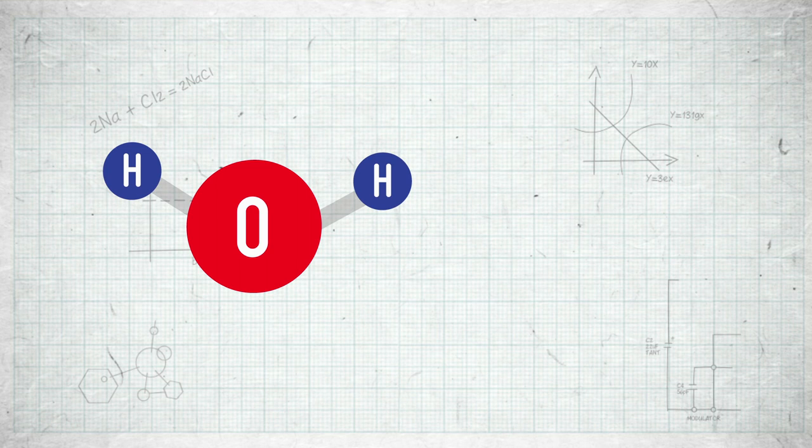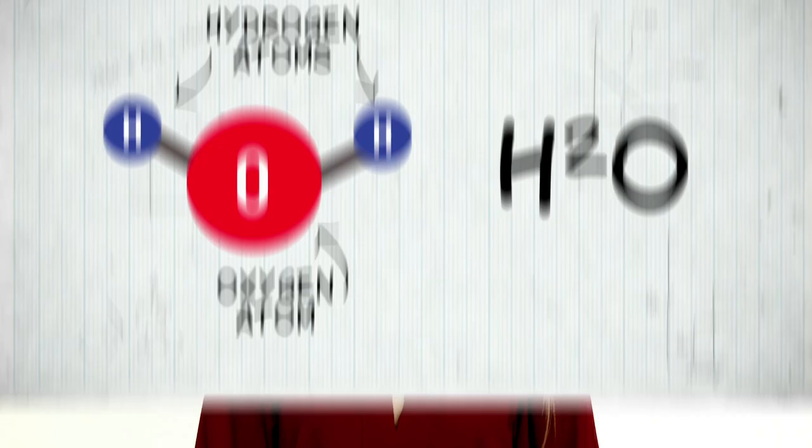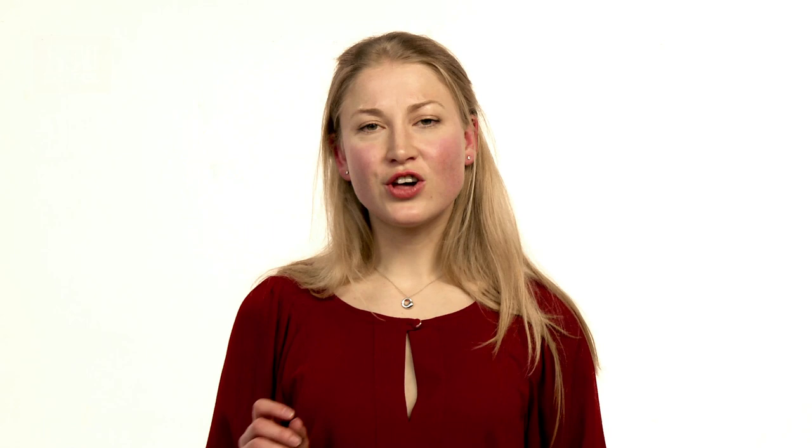When ice is formed, water molecules align themselves in a crystalline arrangement. This is a water molecule, H2O — two hydrogen atoms bonded to one oxygen atom. When the water molecules join together to form ice, each oxygen makes a weaker bond, called a hydrogen bond, with two other hydrogen atoms.